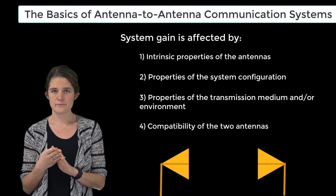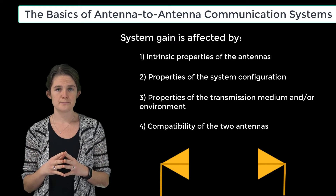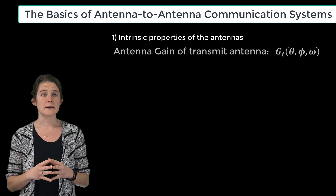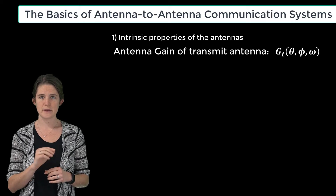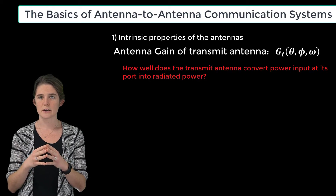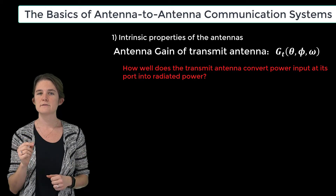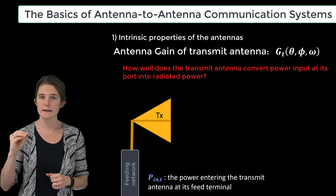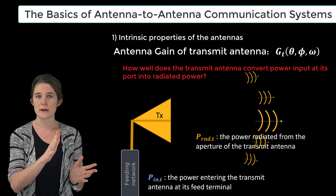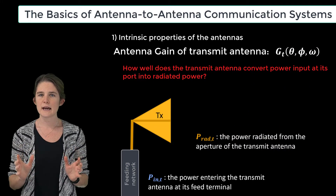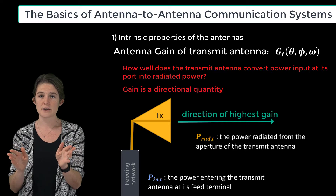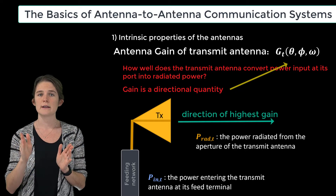The first consideration is the intrinsic properties of the individual antennas. Starting with the antenna gain of the transmit antenna — antenna gain, which is different from system gain, is a measure of how well the individual antenna converts input power to output power. For the transmit antenna, the input power is a guided electromagnetic wave entering at the feed port, and the output power is a radiated electromagnetic wave from the body of the antenna. Since the output power is likely concentrated more strongly in certain directions, antenna gain is a directional quantity that depends on the location of the observer relative to the antenna.